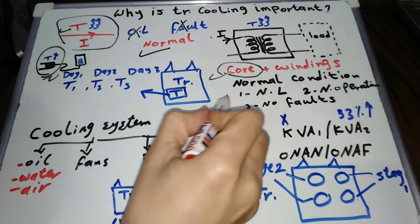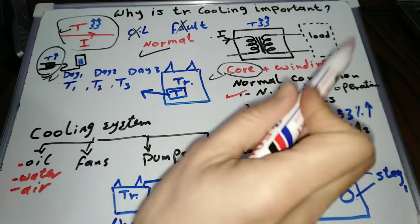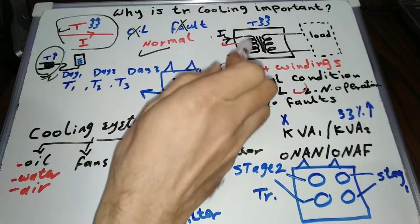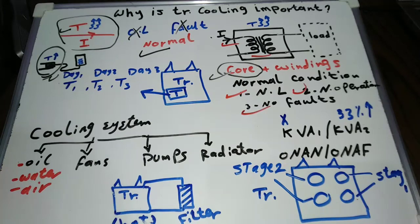So in normal conditions, I mean normal loads, normal operation, and no faults, the iron core and winding of the electric transformer produce heat.